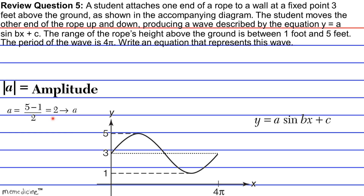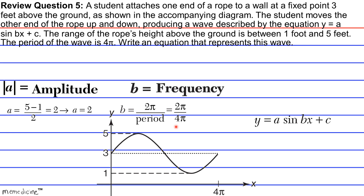The frequency B can be expressed as B equals 2 pi over the period. We were told the period is 4 pi, therefore our frequency B is going to be 1 half. So the two values we have so far are A equals 2 and B equals 1 half.